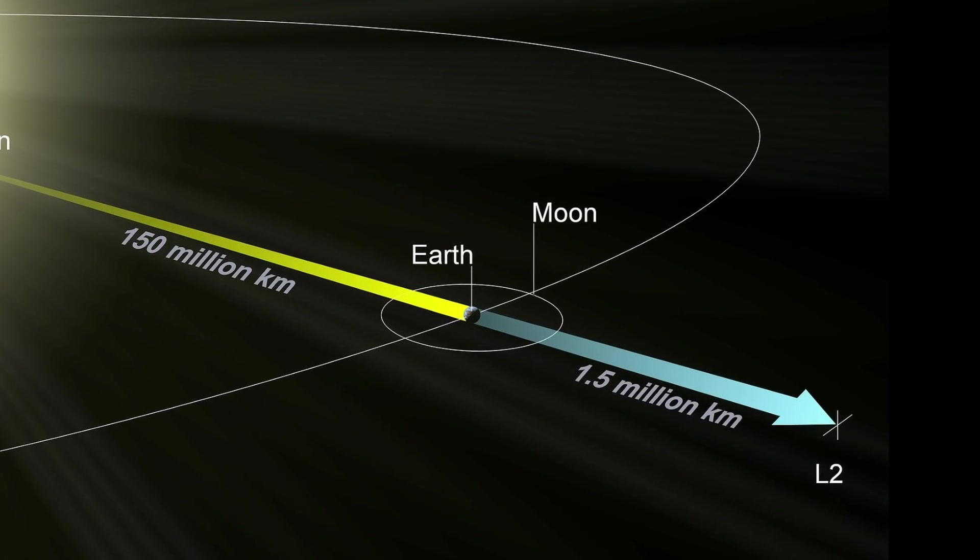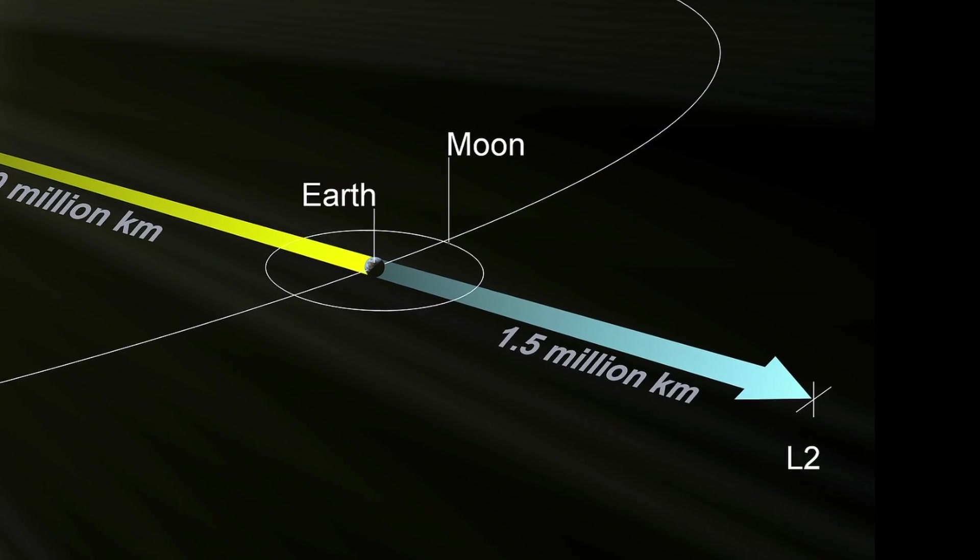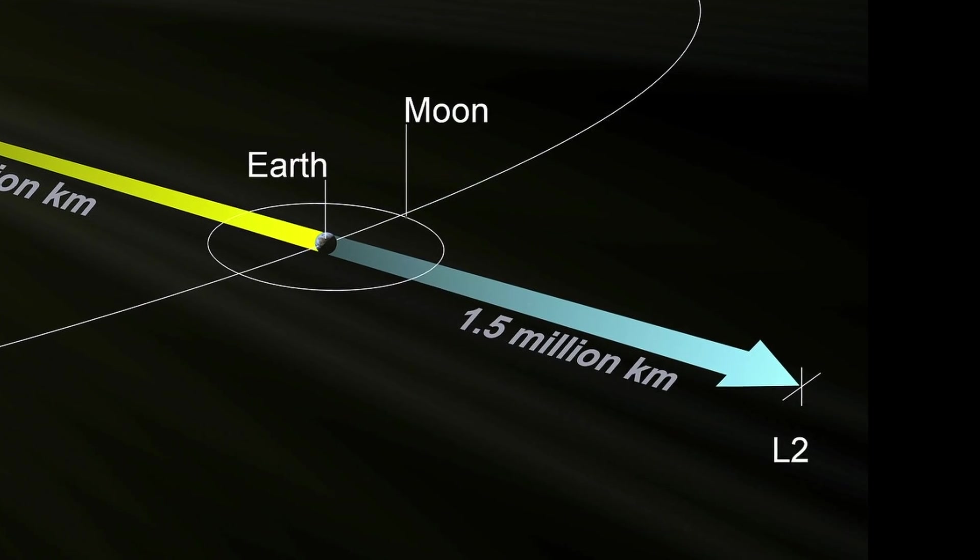And as you probably know the telescope for the past three months was actually flying around this spot right there known as the L2, Lagrange 2 point.